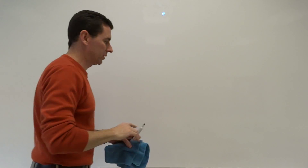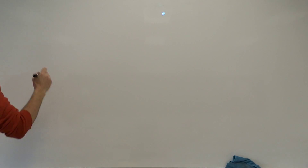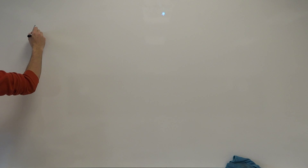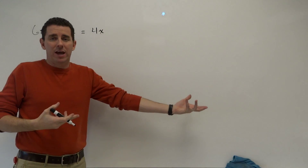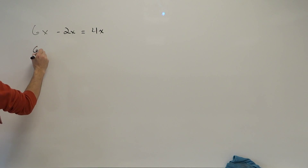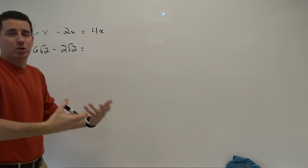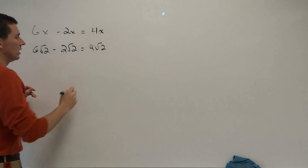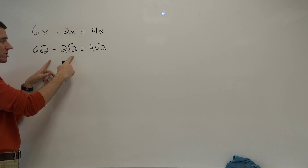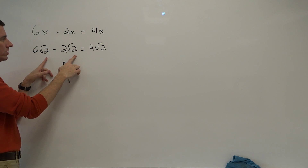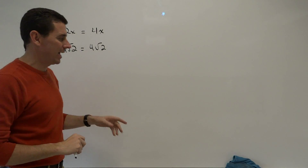I know I'm rushing through this, but this should all be review from Algebra 1. Next, if we're adding and subtracting radicals, I like to think of radicals much like variables. If I said what's 6x minus 2x, you'd say 4x. Well, if I said what's 6 root 2 minus 2 root 2 — if I had 6 root 2's and subtract 2 root 2's, I have 4 root 2's left. You can only add or subtract radicals if they have the same radicand — the same number under the radical symbol. Just like combining like terms in an expression.